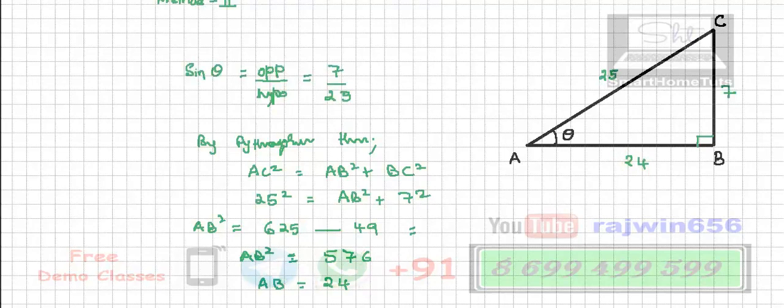Now directly you can write the values of cos theta and tan theta. Cos theta is adjacent side upon hypotenuse.